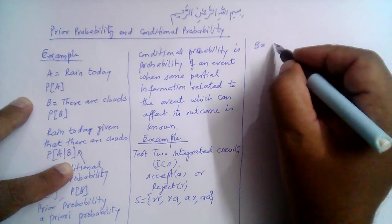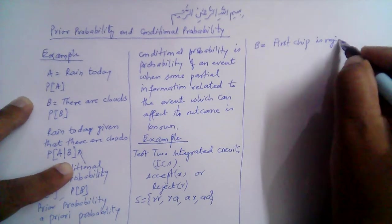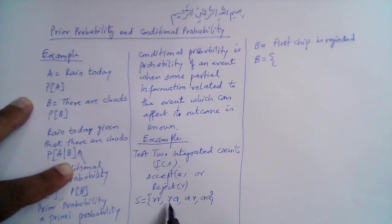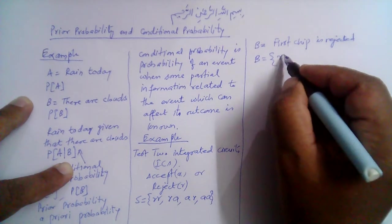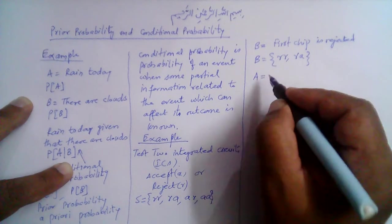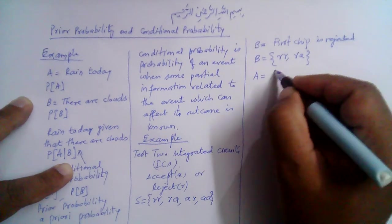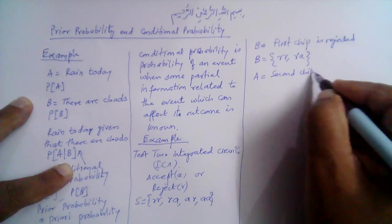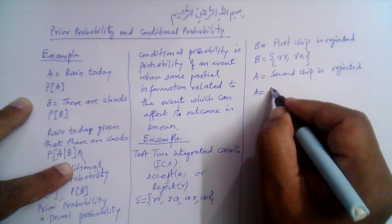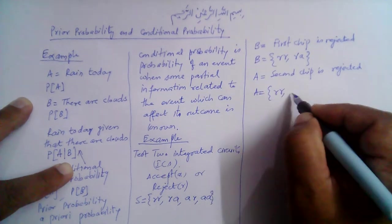Let's consider event B: the first chip is rejected. Mathematically, this is expressed as outcomes where R appears in the first place — {RR, RA}. Similarly, let's consider event A: the second chip is rejected. Mathematically, the second chip is R in the second place — {RR, AR}.